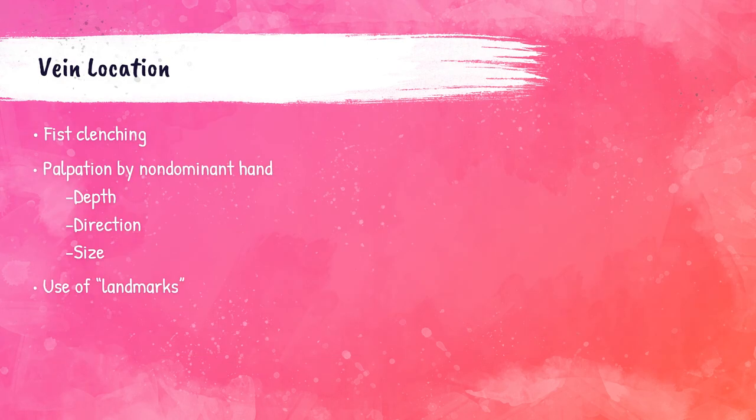Vein location is done by both sight and feel. Apply a tourniquet and have the patient clench their fist. The ability to feel the vein is much more important than the ability to see it. Using the index finger of the non-dominant hand, feel for the vein with a pushing rather than a stroking motion. Palpation determines the size, depth, and direction of the vein to guide needle insertion. Landmarks on the patient's arm can help remember the vein location after the site has been cleansed, since the area cannot be touched again without re-cleansing.